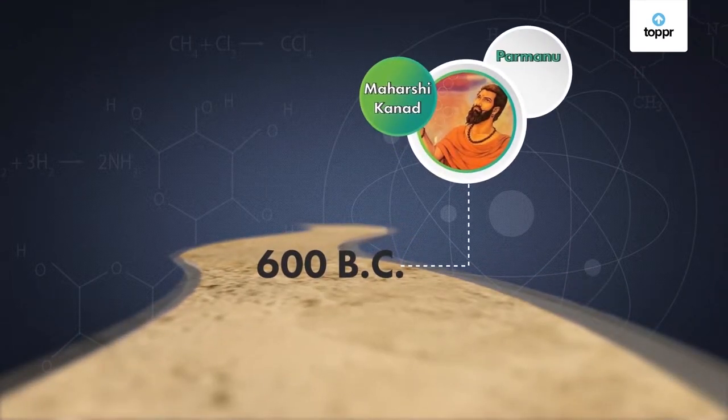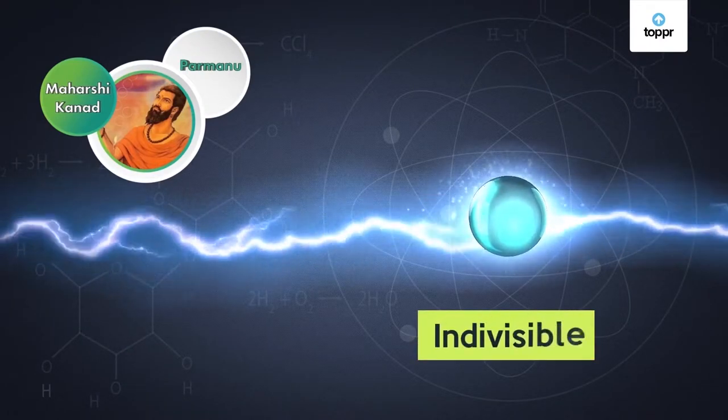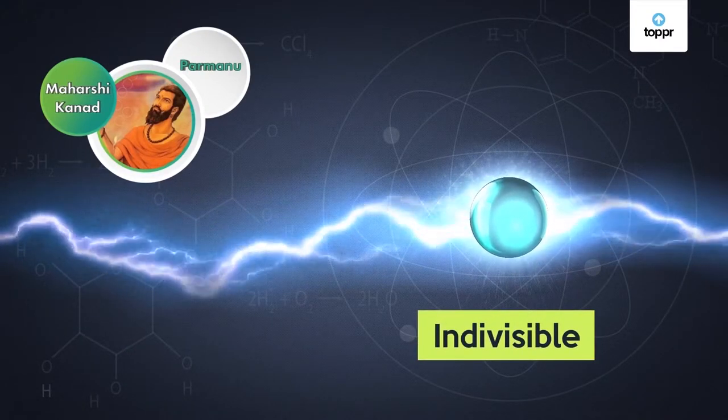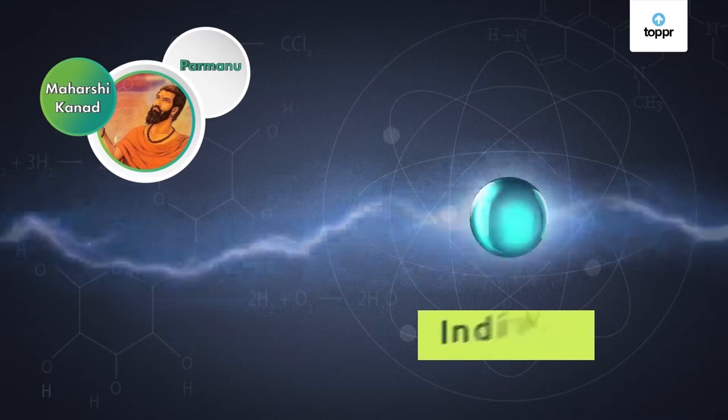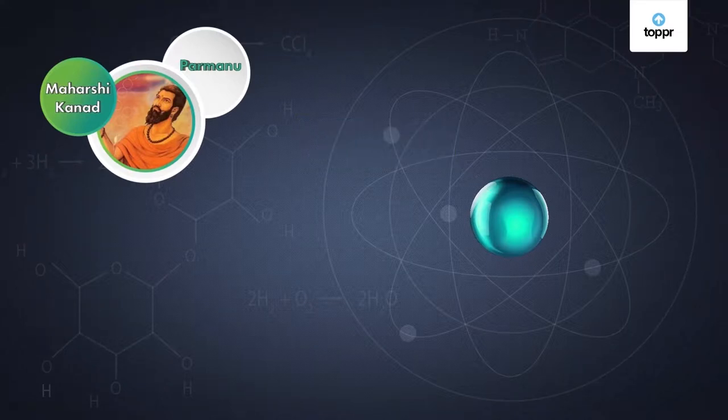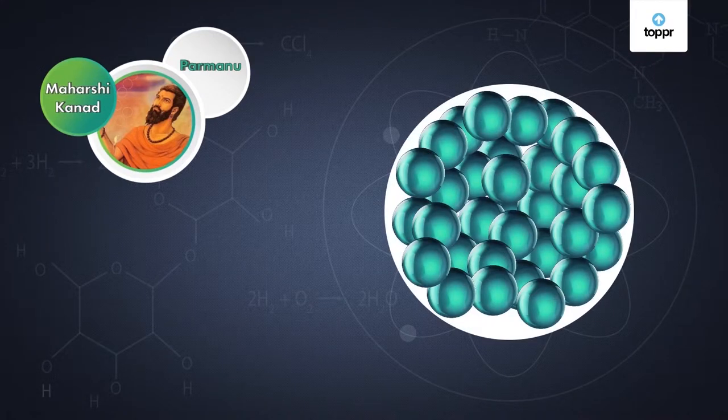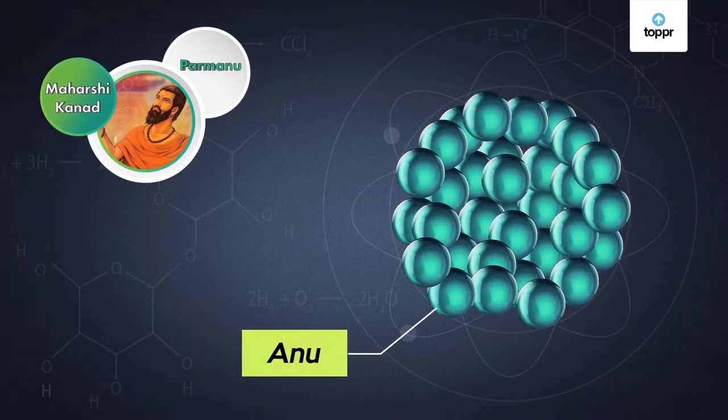Maharishi Kannad in the 6th century BC first gave the idea of an indivisible tiny particle that makes up matter. He called it Parmanu. According to him, Parmanu does not exist in a free state but rather combines with other Parmanus to form a bigger particle called Anu.